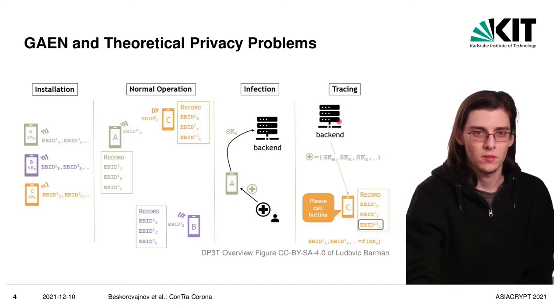They will upload all their secret keys for the last 14 days to a backend and all apps regularly pull all the secret keys from the backend, will expand them again into those short-term identifiers and check if they have seen any of those.